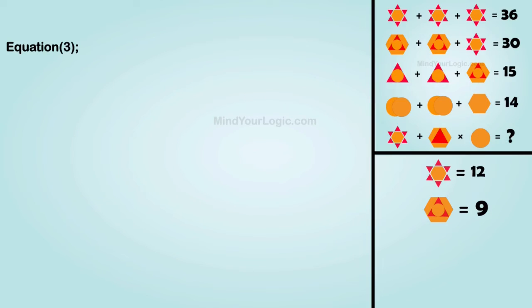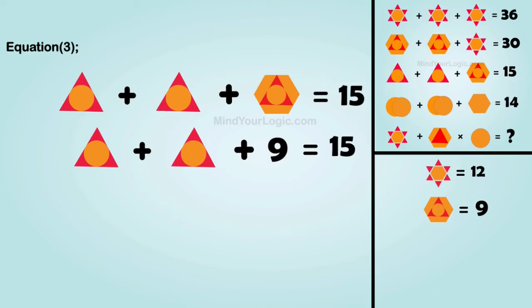Similarly solving equation 3. Triangle circle plus triangle circle plus hexagon triangle equals 15. Substitute the value of hexagon triangle. We get the value of triangle circle equals 3.